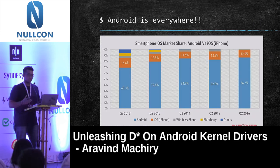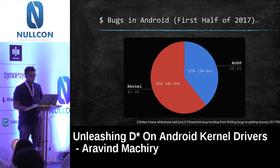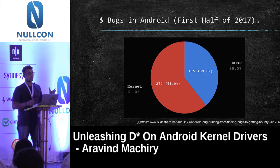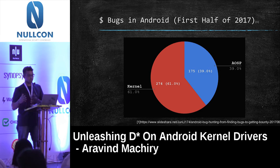Android is everywhere. The market share of Android has been ever increasing since 2012. However, the bugs are also increasing. If you look at the trend of Android bugs over the past four years — looking at the security bulletin released by Google every month — the number of bugs is actually increasing.